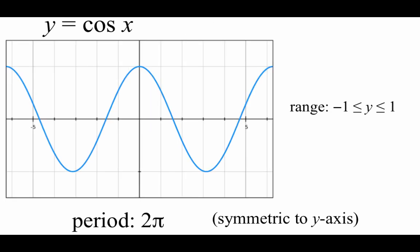Our cosine is going to be very similar to sine, but there are some slight differences. The range of the cosine graph is also going to go between negative 1 and positive 1, because we're still pulling values from the unit circle — cosine is just the x values from the unit circle, and those still go between negative 1 and positive 1. Cosine also has a period of 2 pi. As far as symmetry goes, a cosine graph is symmetric to the y-axis, meaning if we folded this picture along the y-axis, all of our points would match up.